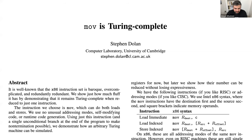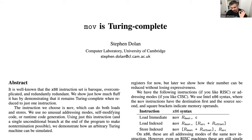Another example: in x86 assembly language, you can build an entire computer using just the MOV instruction and one unconditional branch to go back to the beginning. All instructions in between can be just MOV instructions — nothing else — which is a fascinating demonstration of how complex behavior can emerge from a single simple building block.